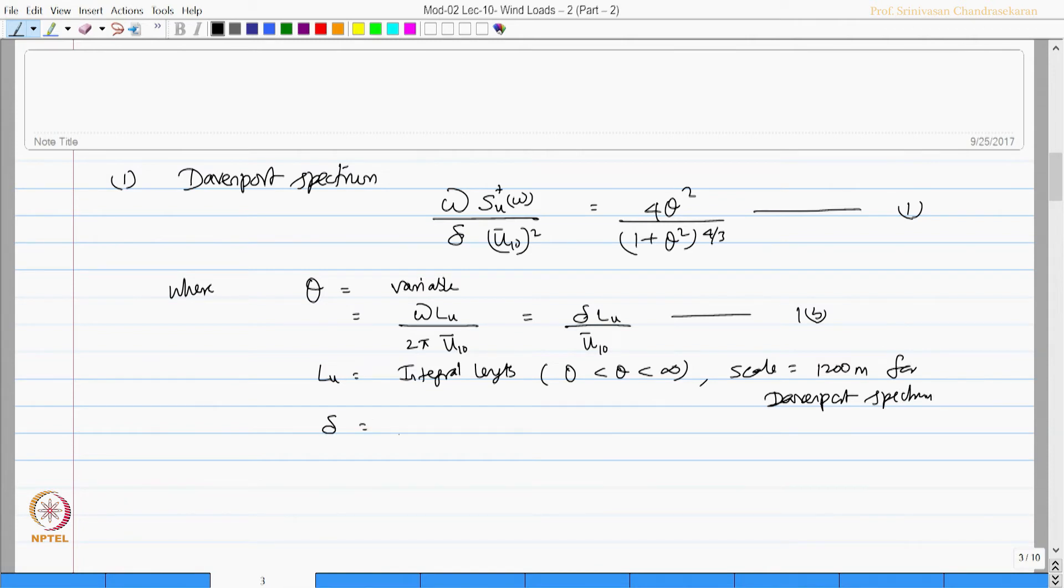The integral length scale is 1200 meters for Davenport spectrum. Del is called surface drag coefficient which is 0.001 at reference height of 10 meters.